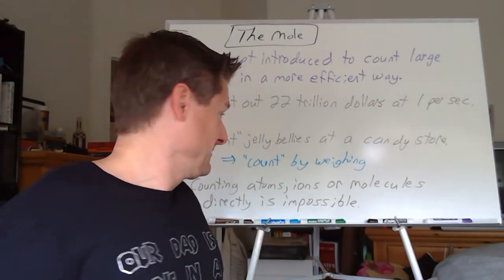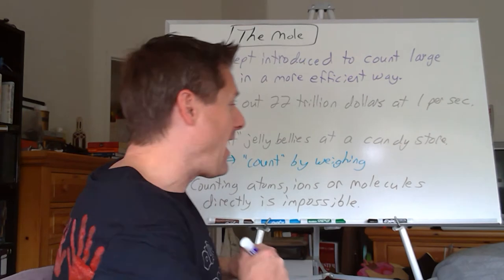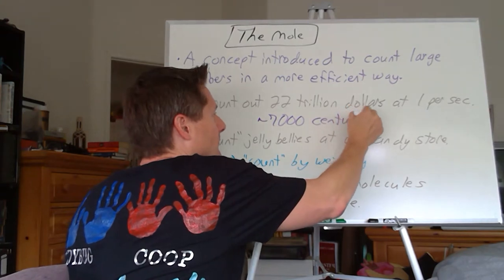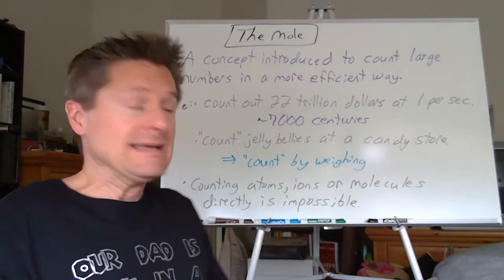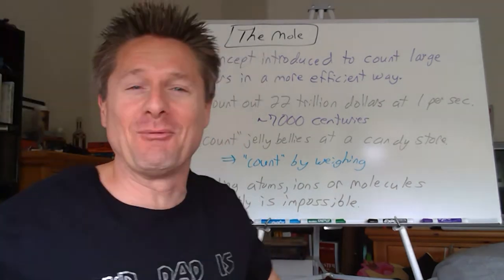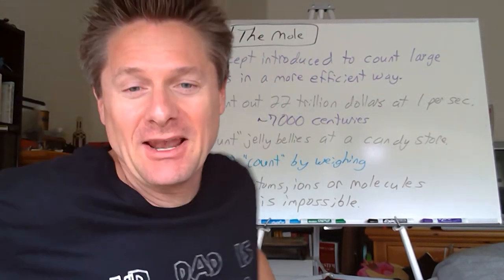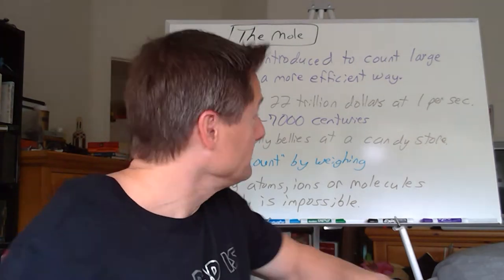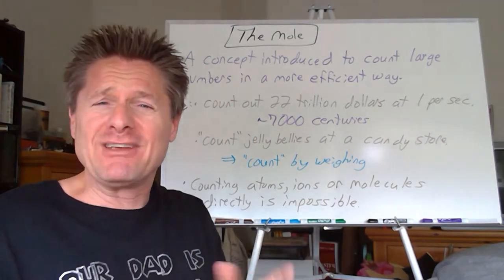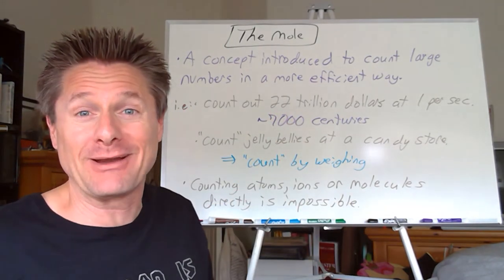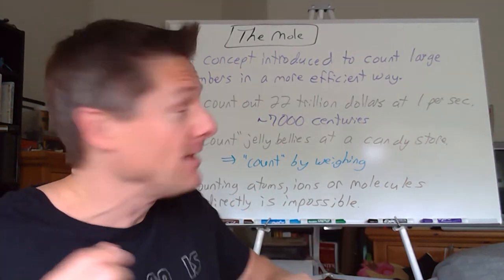If you do that, it's a lot of years. I converted that to centuries. I got around 7,000 centuries. That's about how long it would take you to count out $22 trillion. So would you agree that's not efficient? 7,000 centuries, counting $1 per second. That's $22 trillion. It's just not going to work out. It's inconceivable.